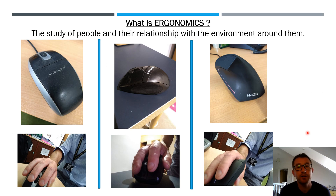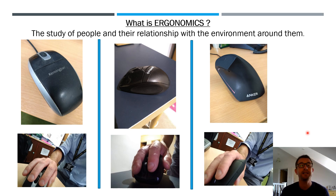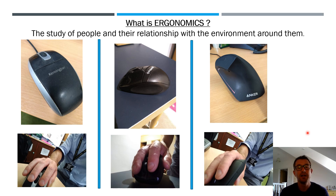The first thing is the ergonomics definition. Ergonomics is the study of people and their relationship with the environment around them. That can be difficult to understand, so I'm going to take you through three examples of three computer mice and how one might be more ergonomically beneficial to the person working with them or the environment around them.